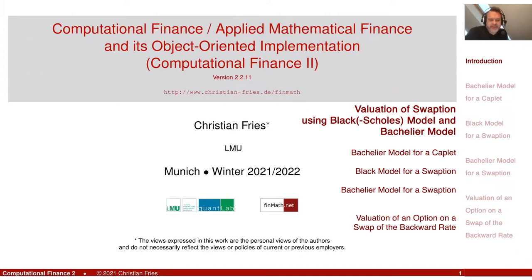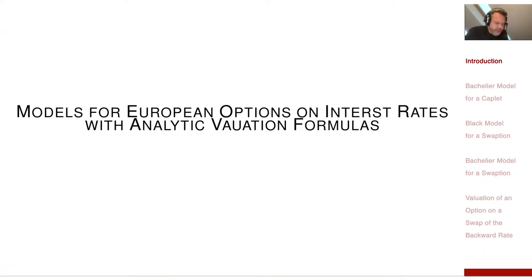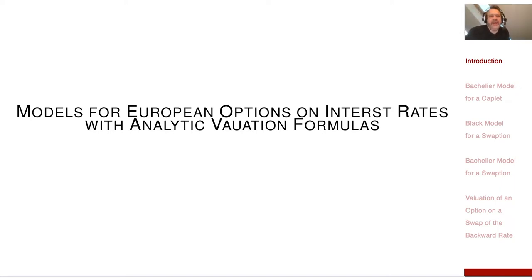We are in this section for models of European options on interest rates. We can very easily derive a Black-Scholes-like formula for the valuation of a Caplet assuming a log-normal process for the forward rate. We have this generalized Black-Scholes formula where we just need that the index is a martingale under a certain measure associated with a financial product that also appears in the payoff.